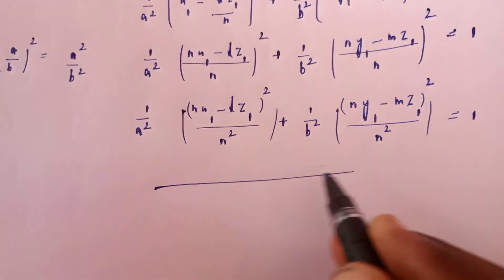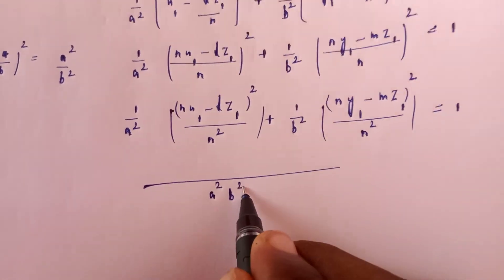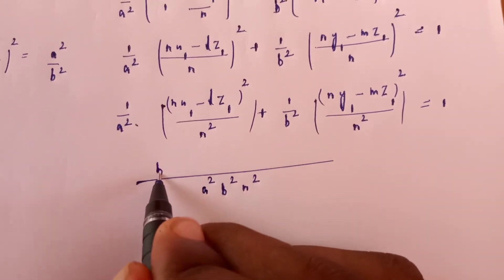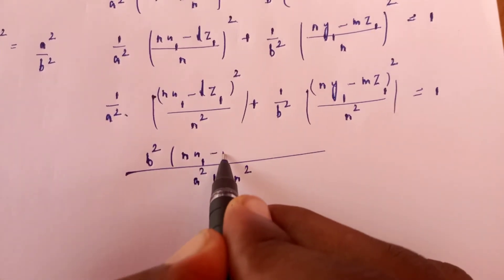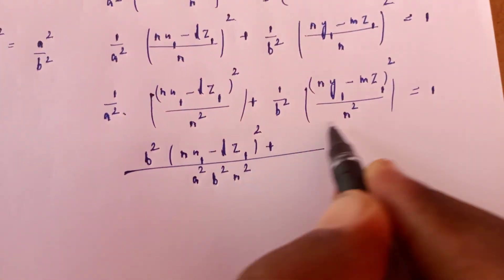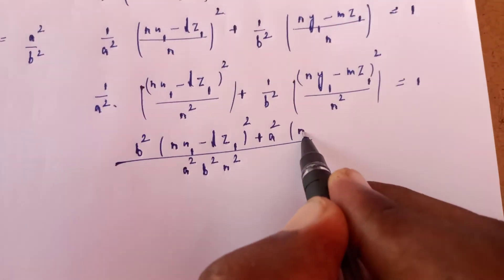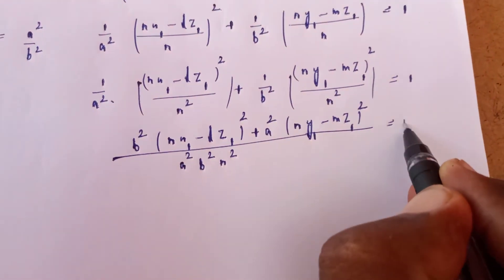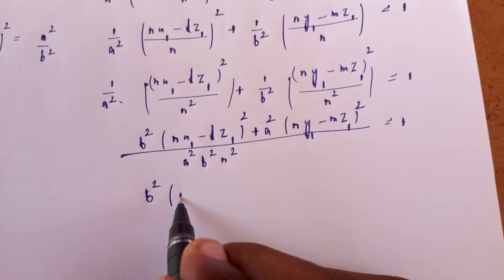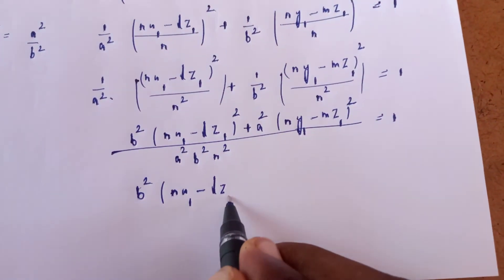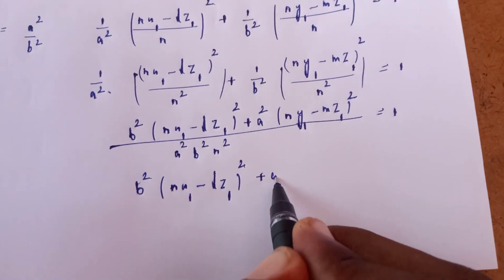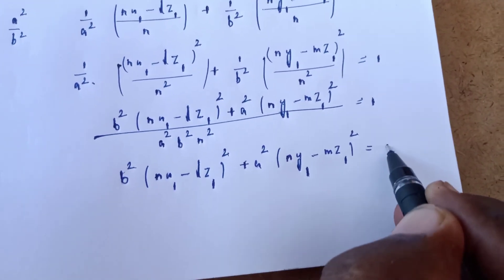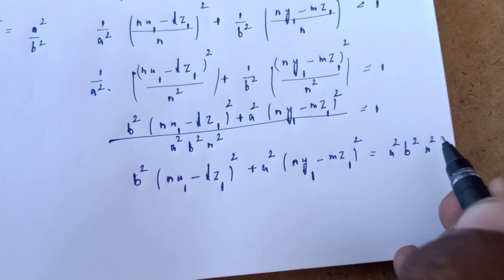Taking LCM as a squared b squared n squared, the n squared cancels. After cross multiplication, the required cylinder equation is: b squared times (Nx minus Lz) whole squared plus a squared times (Ny minus Mz) whole squared equal to a squared b squared n squared.